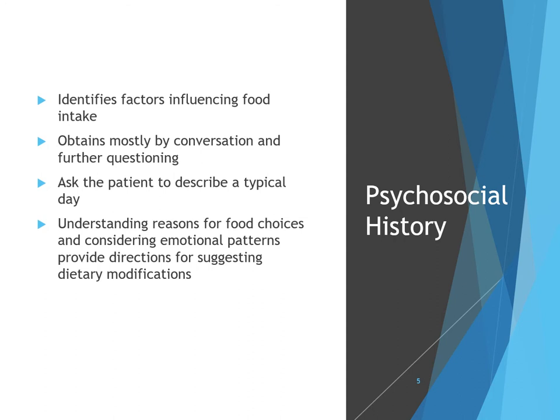When asking about psychosocial history, we want to identify factors that will influence their food intake. If they're vegan, they're going to have different food intake than someone who is omnivorous. We obtain this information mostly through conversation — they'll usually say something that prompts another question. Through learning all the different factors we need to pay attention to, you kind of pick up the path you take with your questions.